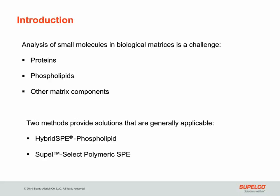Analyzing small molecules present in biological matrices like blood, serum, or plasma is a challenge. These matrices contain proteins, phospholipids, and other components that interfere with analytical techniques, especially mass spectrometry. I will present information today on two solutions that are generally applicable to the cleanup of biological matrices prior to mass spec analysis. These are hybrid SPE phospholipid technology and the Supelco Select polymeric SPE materials.